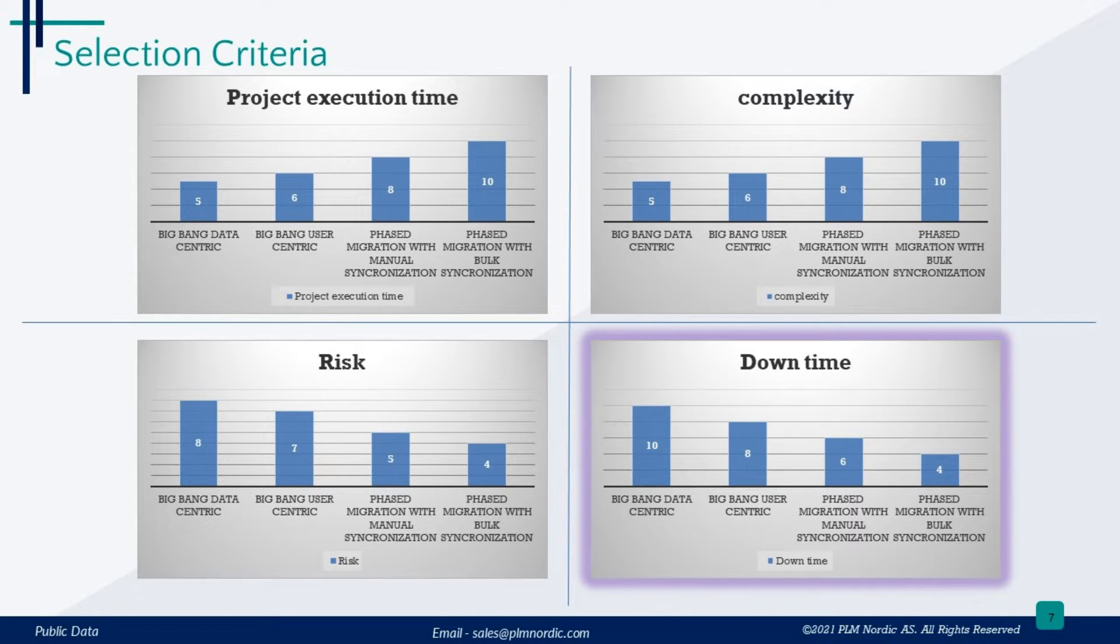Downtime is crucial too. Big Bang data-centric migration needs the most downtime. The other strategies, like Big Bang user-centric, phased migration with manual or bulk synchronization, are designed to minimize this downtime, making them less disruptive options.